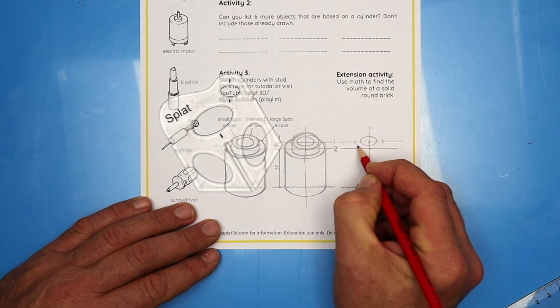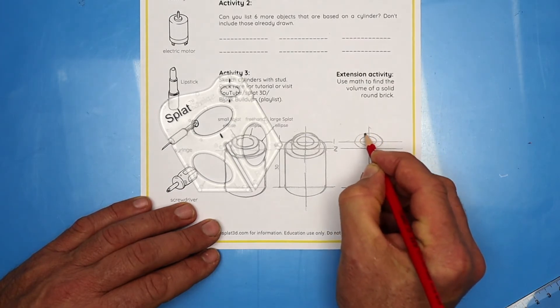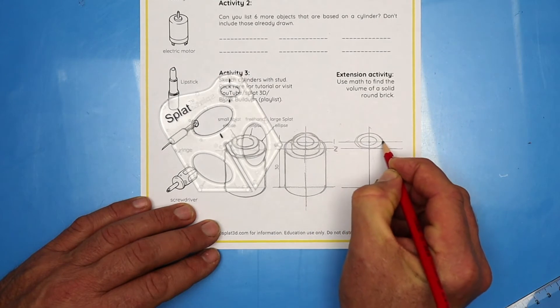It probably should just about touch the second axis down. So lightly draw it in and when you've got your hand moving, press a little harder and draw in the full ellipse.